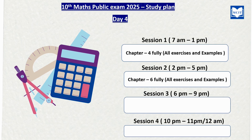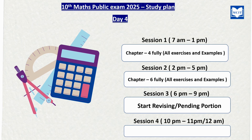In Session 2, Chapter 6 is full — you will see all exercises and example sums. In Session 3, you will revise and continue. If you finish Chapter 6 in Session 2, you will continue in Session 3. If you finish earlier, you will start revisions by 10 o'clock. Session 3 will be a very relaxed schedule, and you will have studied all 4 chapters by the end.